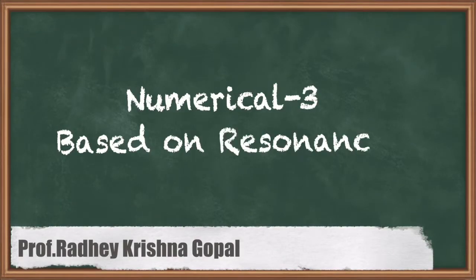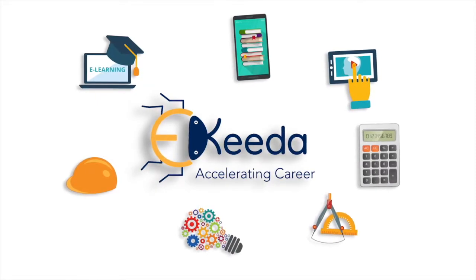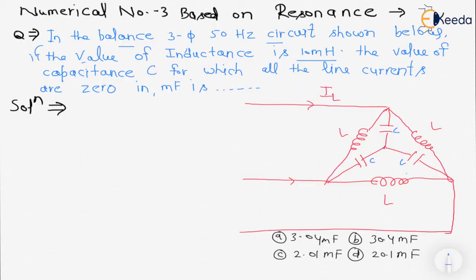Hello friends, now we are going to solve numerical number three based on resonance. Here is the given question: in the balanced three-phase 50 hertz circuit shown below, the value of inductance is 10 millihenry.